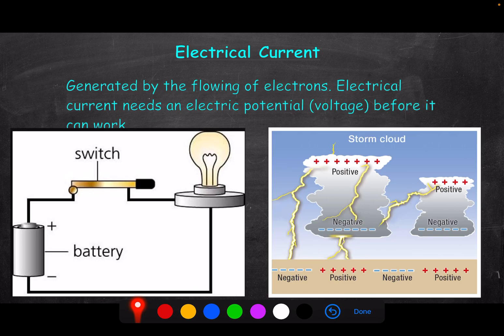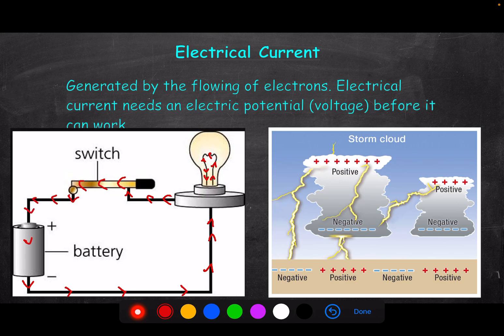On the left here we have a closed circuit, meaning current can flow. The source of potential — the voltage — is the battery, which provides the push. Electrons flow from the negative terminal of the battery through the circuit into the light bulb filament, where friction causes it to heat up and glow, then back through the switch and back to the battery, repeating until the battery runs out of voltage.